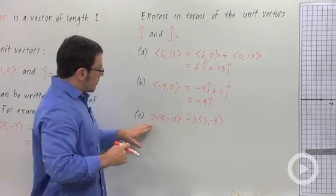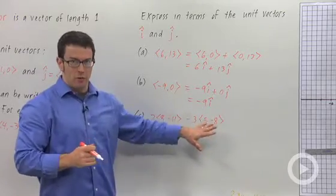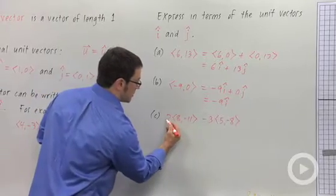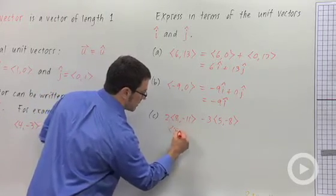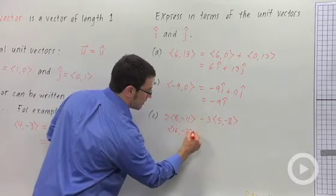Now here, you'd want to multiply this out and simplify before you convert it to i and j form. So let me distribute this scalar multiple. 2 times 8 gives me 16. 2 times negative 11, negative 22, minus.